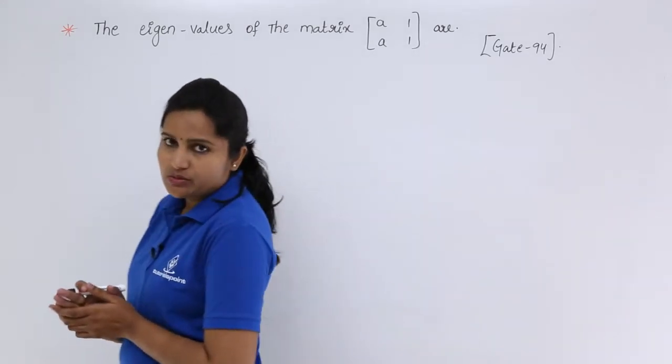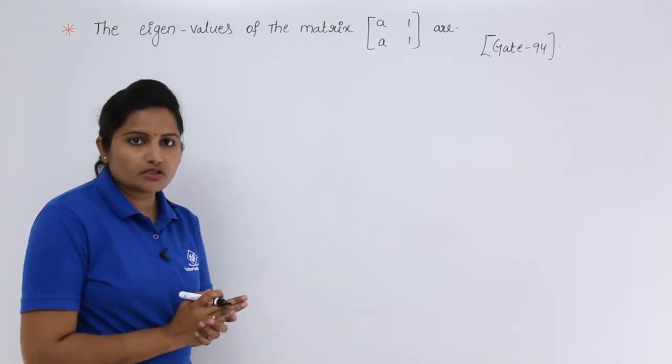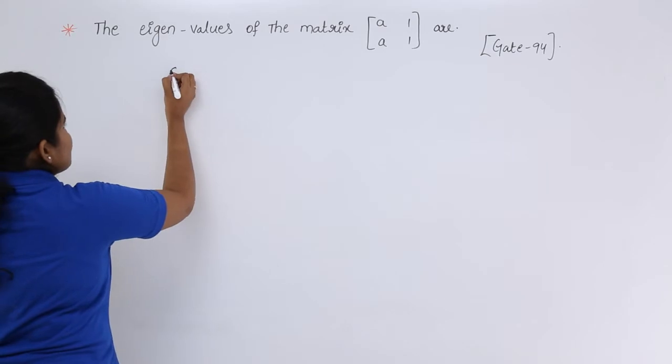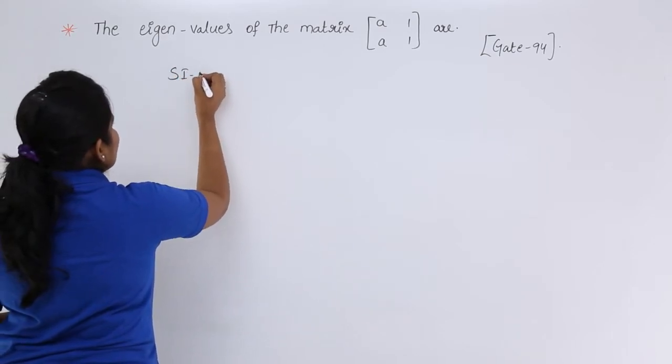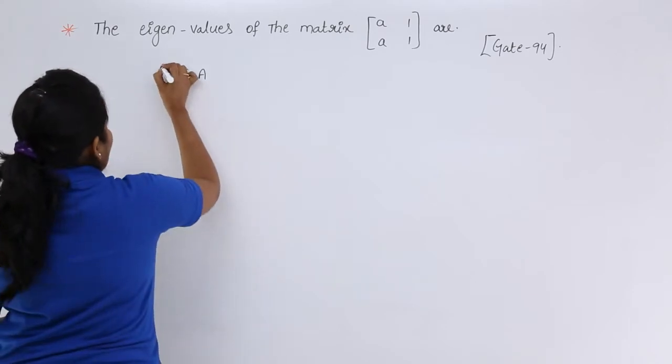In your state space model, when you are deriving state transition matrix, you are supposed to get some value like this: Si minus A. So this Si minus A is a matrix. If you take its modulus, then this will give a characteristic equation.